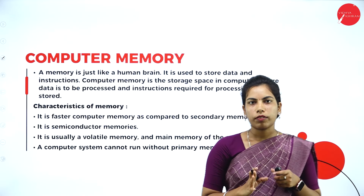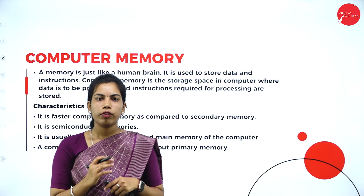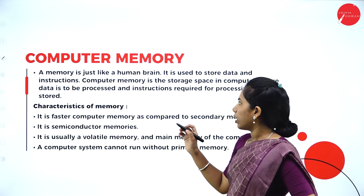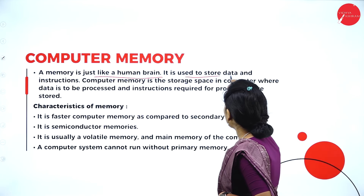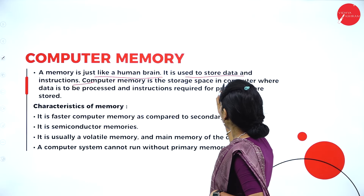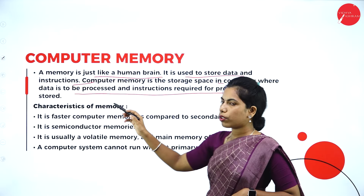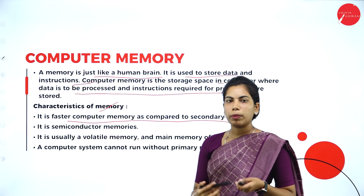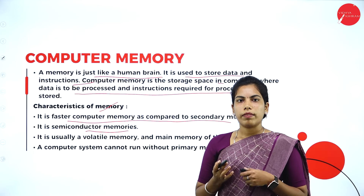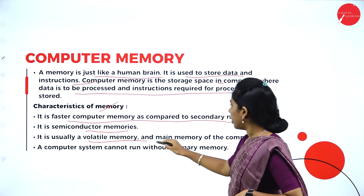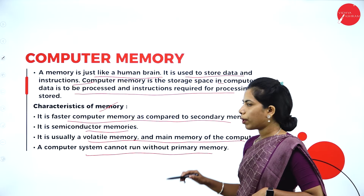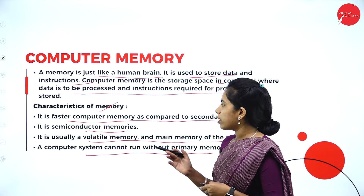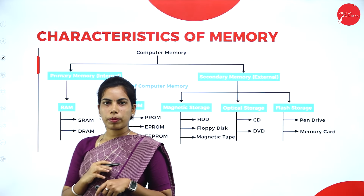The next one is computer memory - this is also one of the most important topics. Memory is needed to store processed data for future use. Computer memory is just like a human brain - it stores data and instructions. Computer memory is the storage space in the computer for data and instructions to be processed. Primary memory is faster compared to secondary memory; it uses semiconductor devices to store data, is usually volatile, and is the main memory. The computer system cannot run without primary memory. Memory is divided into primary memory, secondary memory, and cache memory.